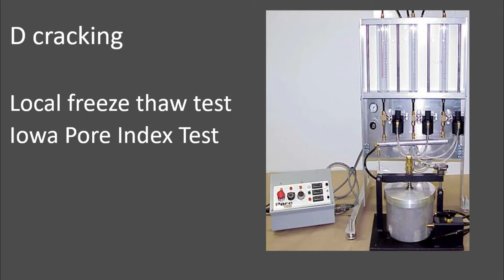That's when it's an aggregate issue that usually is causing freeze thaw problems. There are local freeze thaw tests that a lot of different DOTs have out there, and then something called the Iowa Pore Index Test that is also useful as probably the most widely used local state method that people use to check their coarse aggregates out if you're worried about that.